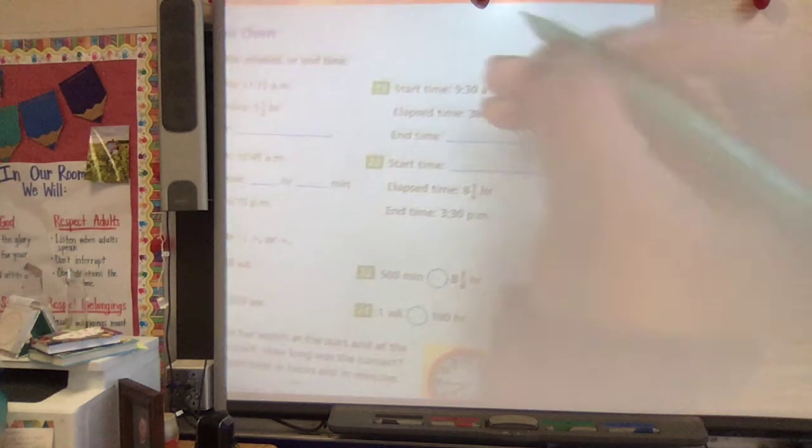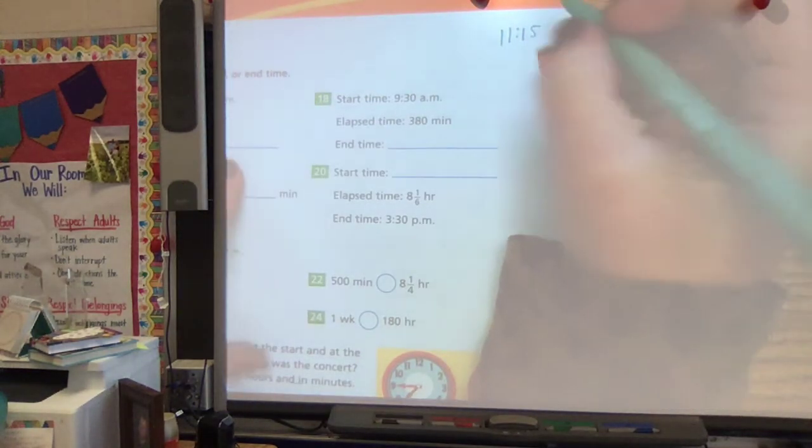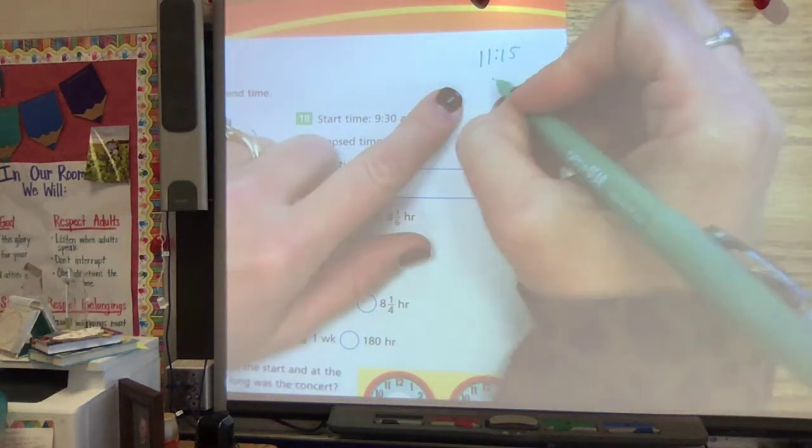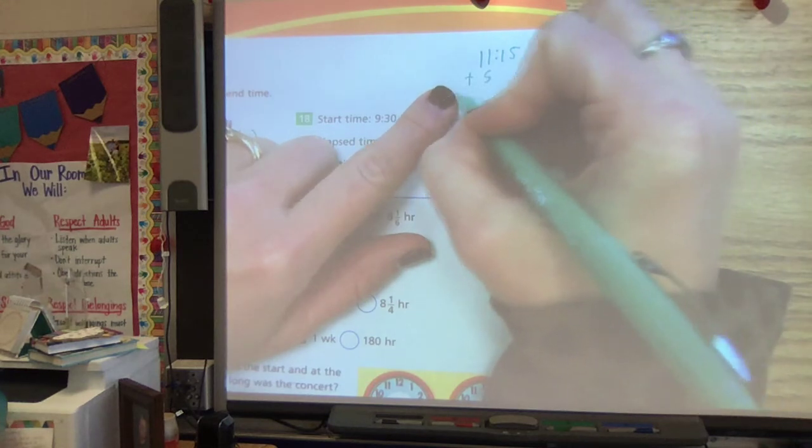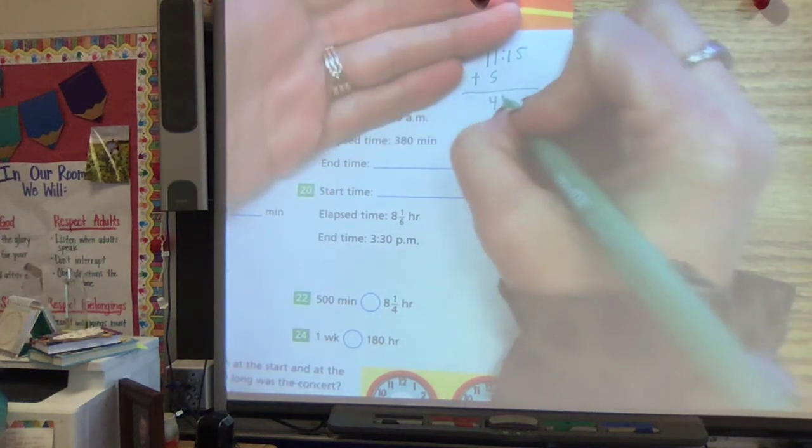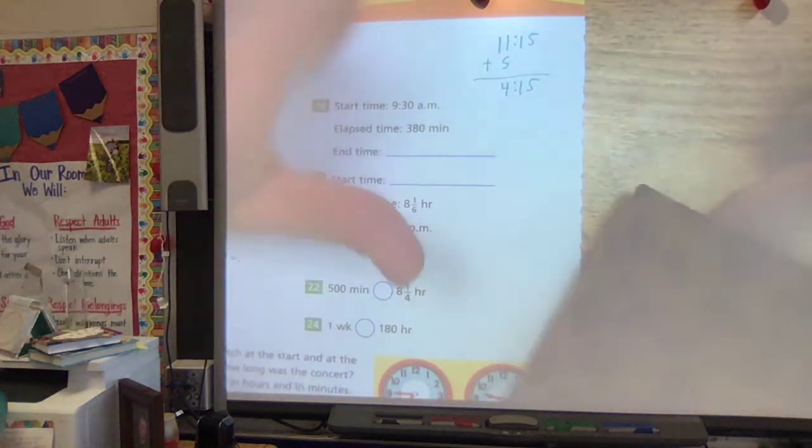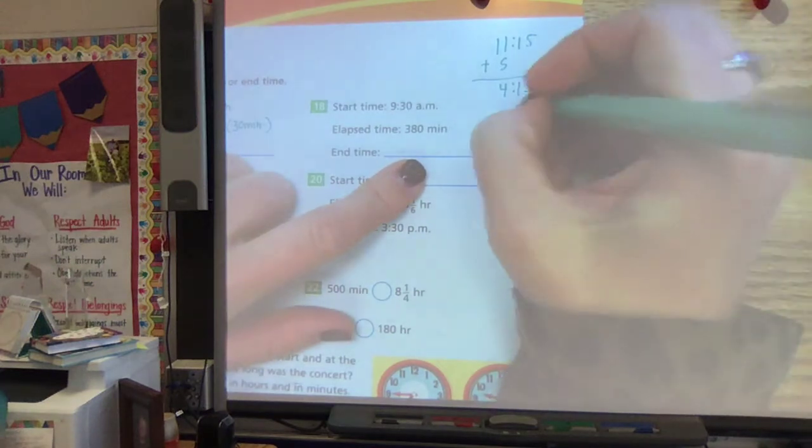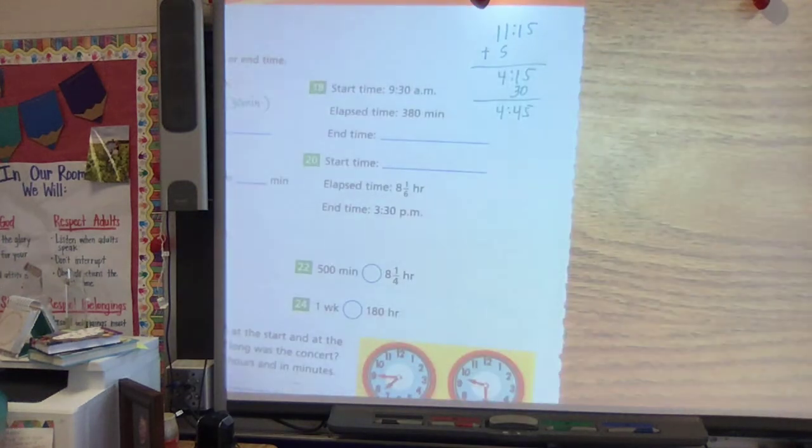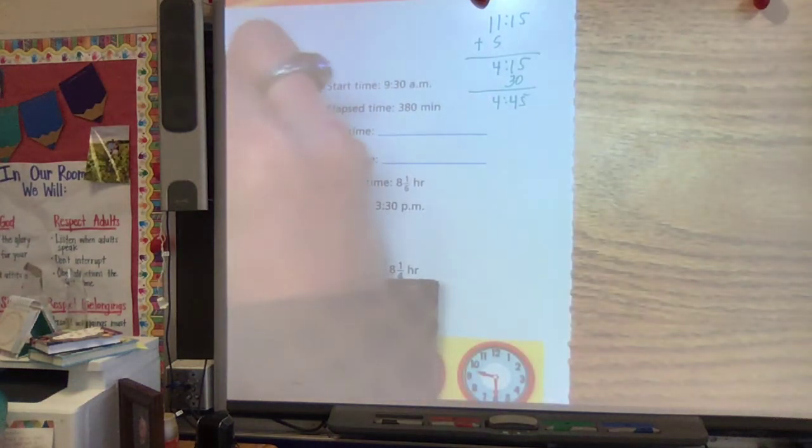All right. So let's think about that. 11:15. Five and a half hours, which I know is five hours and 30 minutes. So first I want to add my five hours. So if I'm at 11 plus five hours, 12, 1, 2, 3, 4. That would be 4:15. So don't forget when you get to 12, you move back to one. That's 4:15. Then I need to add my 30 minutes, which would give me 4:45. So 4:45 is what time you would be done.